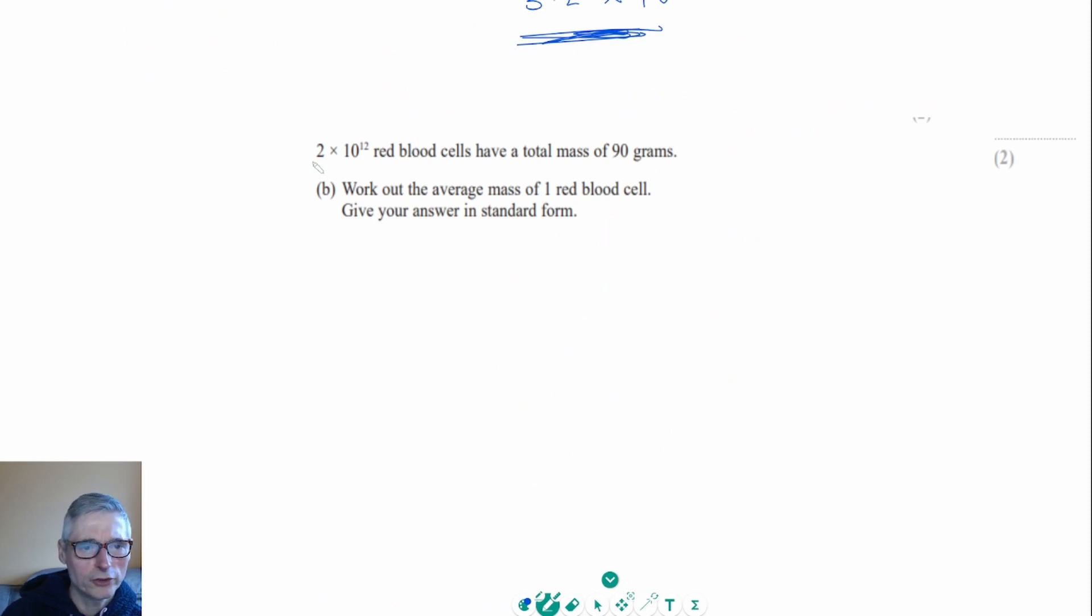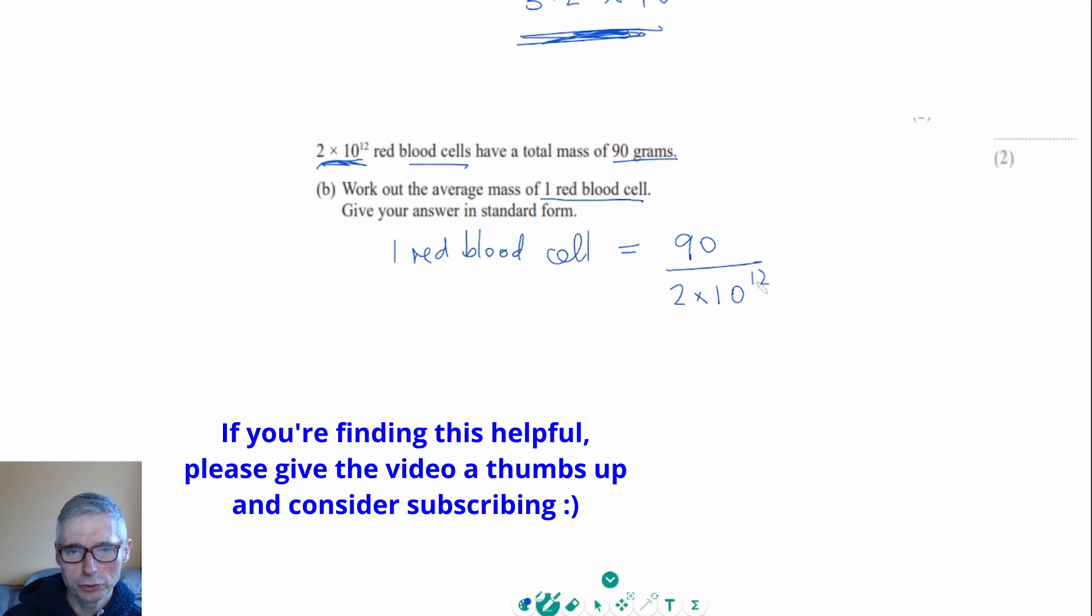In the second part of the question, we're told that 2 times 10 to the 12 red blood cells have a total mass of 90 grams, and we've got to work out the average mass of one red blood cell. So one red blood cell would have a mass which would be 90 grams divided by how many red blood cells there were, which is 2 times 10 to the 12.